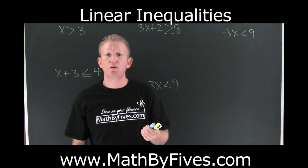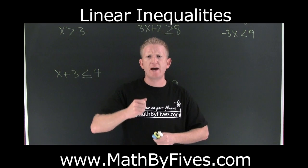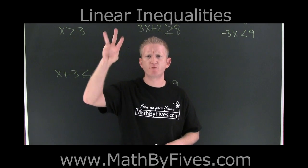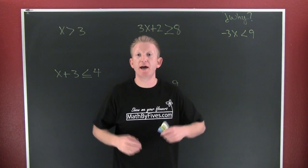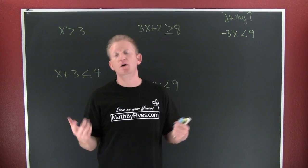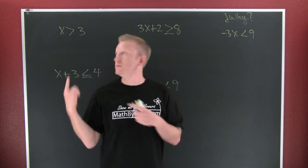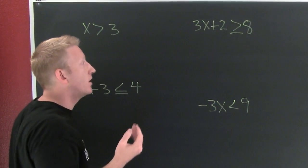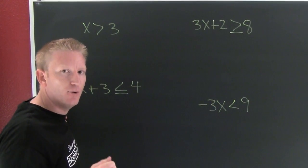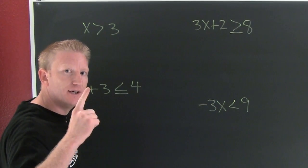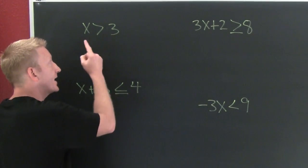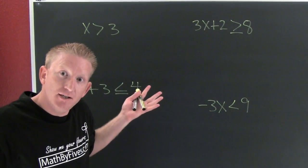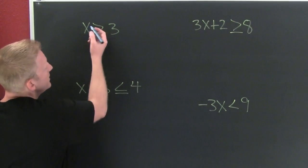Inequalities — we're going to do three things: solve, graph, and write in interval notation. These inequalities solve just like equalities except for one kind. This is not that kind, so I need to solve it to get x by itself.